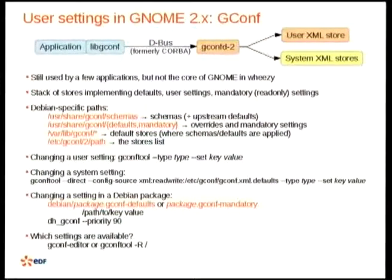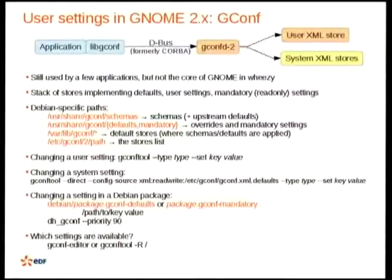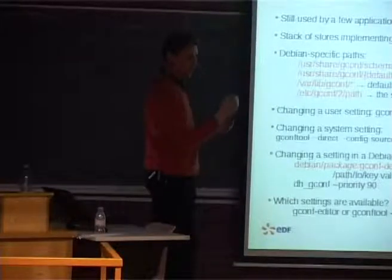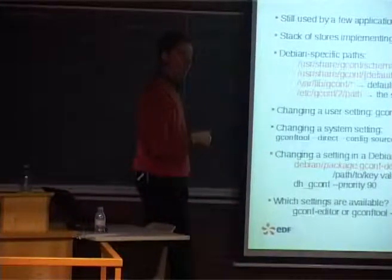In GNOME 2.30, and still for a few applications, user settings are defined through the well-known GConf. GConf works in a not-so-complicated way. There is a library and a daemon which is spawned by DBUS. The daemon accesses stores of settings, which are XML trees. The stores are stacked with an ordering — you can have a read-only store, a read-write store, so you can have default user settings, and another read-only store on top, which provides mandatory settings that cannot be overridden.